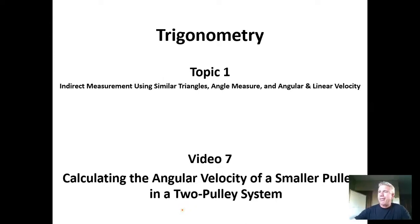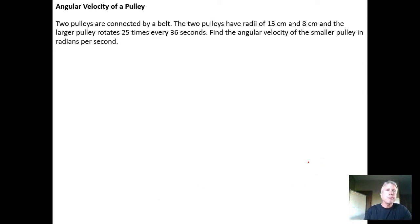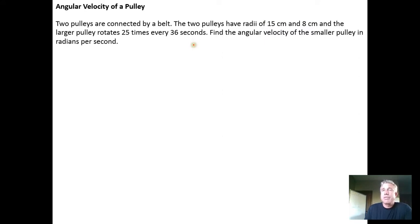In this video we're going to look at how to calculate the angular velocity of a smaller pulley in a two-pulley system. The problem states: two pulleys are connected by a belt. The two pulleys have radii of 15 centimeters and 8 centimeters, and the larger pulley rotates 25 times every 36 seconds. Find the angular velocity of the smaller pulley in radians per second.